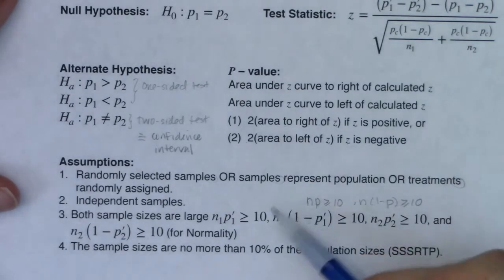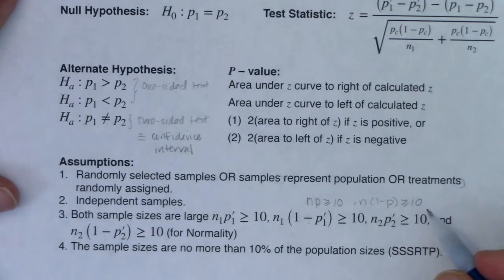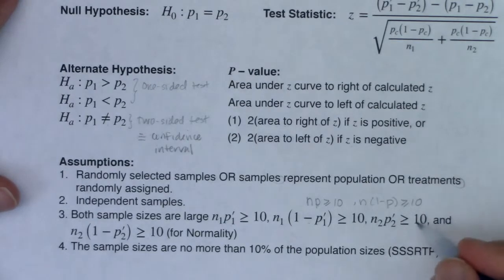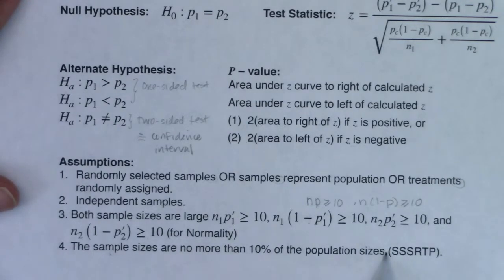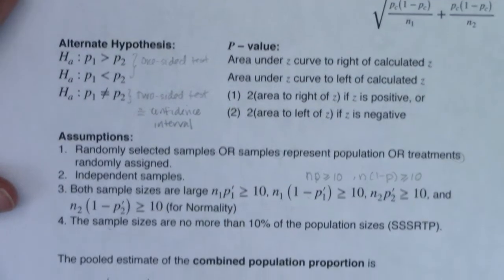Your book actually sets the normality threshold at 5 successes and failures rather than 10. Most statisticians use 10; your book is being a little loose with normality. We also need sample sizes small relative to population size so we can sample without replacement.